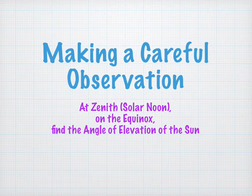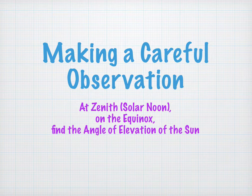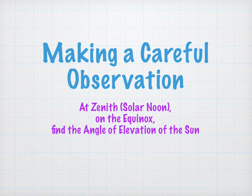Making a careful observation. So here is the key. And you're only going to need to do this once, exactly one moment. At zenith, or solar noon, on the equinox, you are going to find the angle of elevation of the sun.